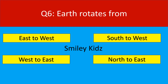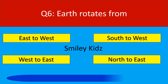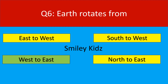Question number 6. Earth rotates from. Your options are east to west, south to west, west to east, north to east. Your time starts now. Your time is up. The correct answer is west to east. Earth rotates from west to east.